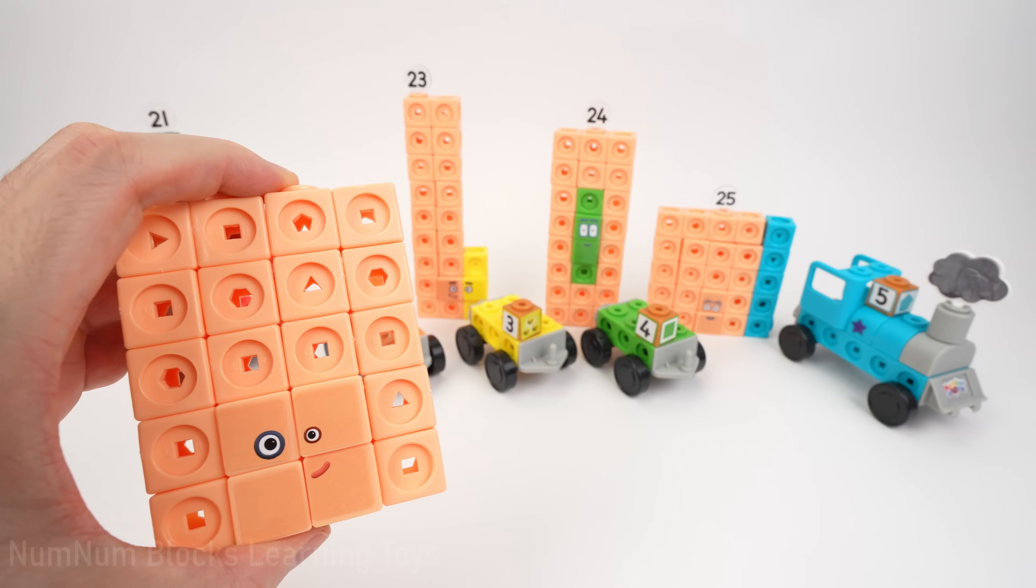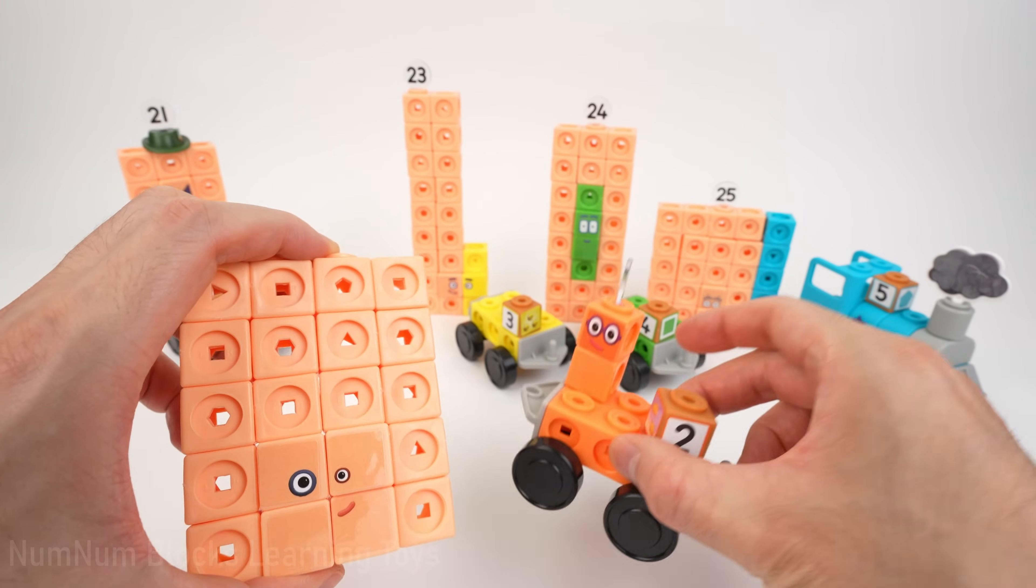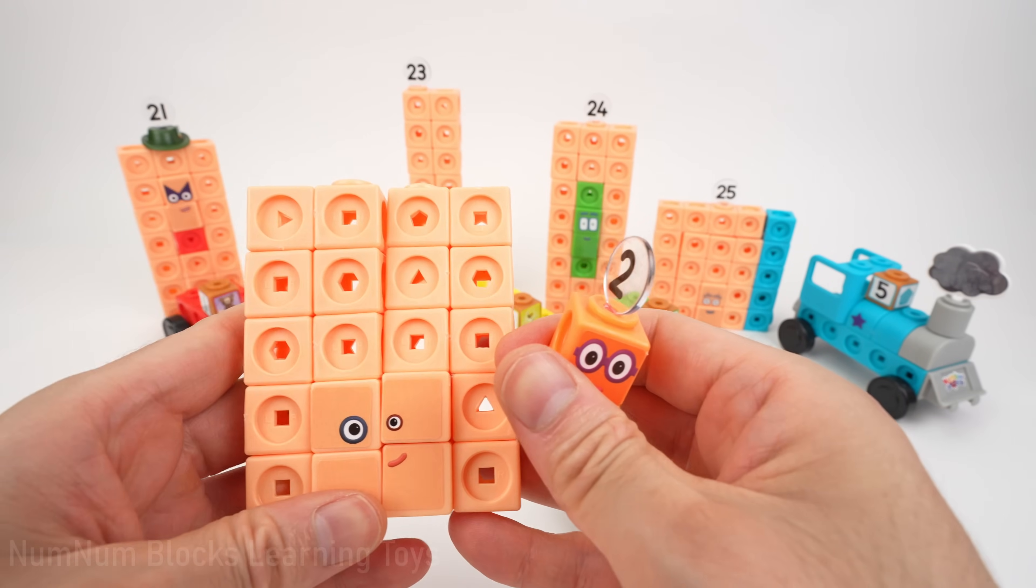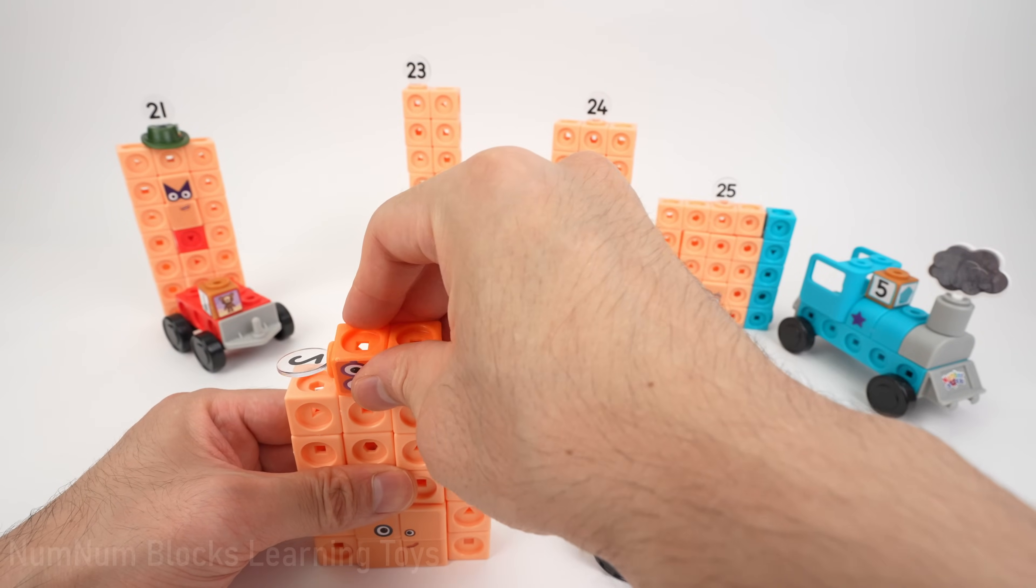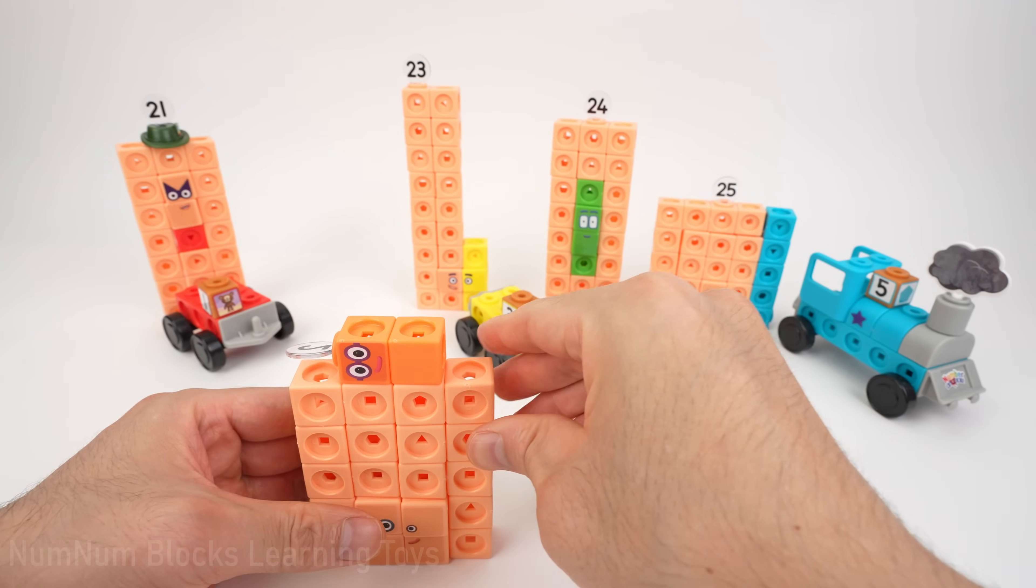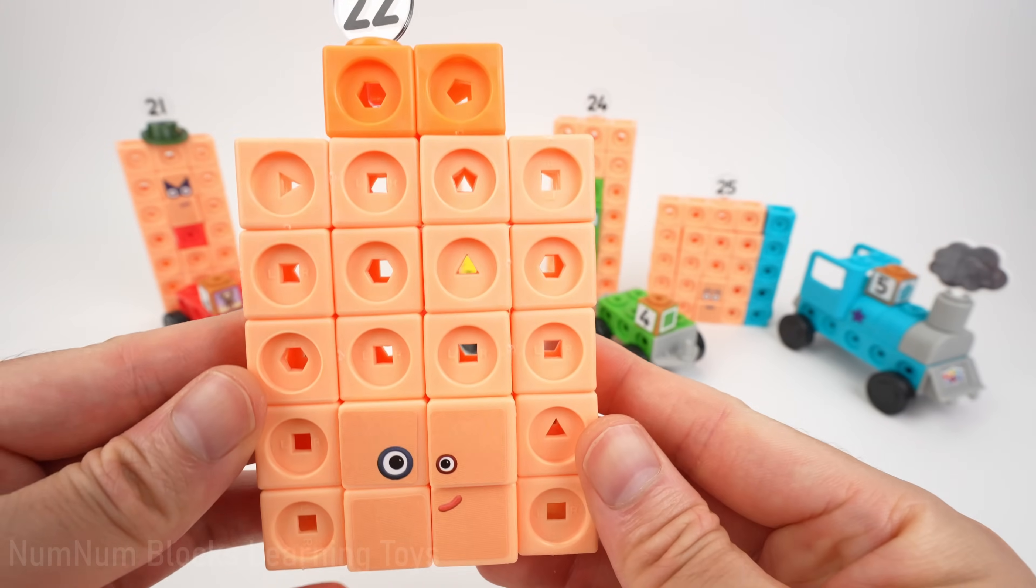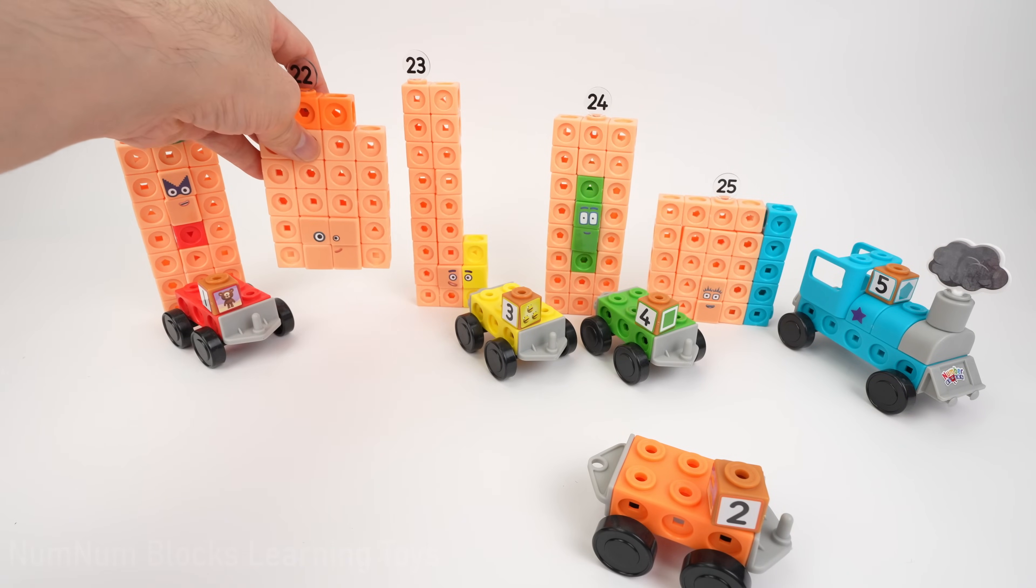Here's the last peach color number block. We only have one train left. It's the number 2 train. This number block should be number 22. Adding 2 to 20 gives us 22. All right, we built 22. Did you know 22 is made of two 11s?